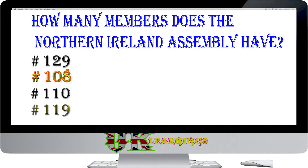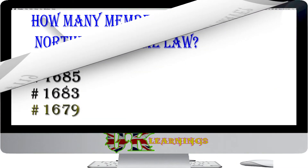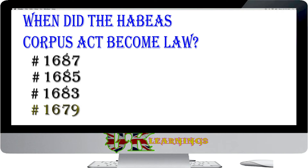The answer is 108. The Northern Ireland Assembly was established soon after the Belfast Agreement, or Good Friday Agreement, in 1998. There is a power-sharing agreement which distributes ministerial offices amongst the main parties. The Assembly has 108 elected members, known as MLAs — Members of the Legislative Assembly. They are elected with a form of proportional representation.